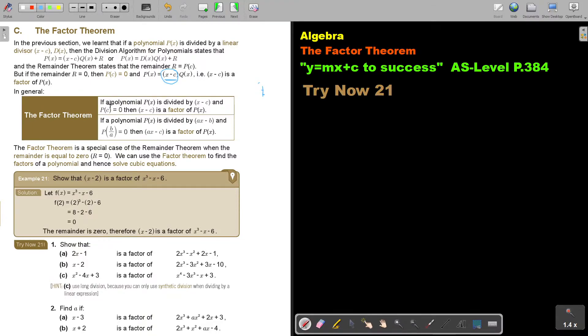Now, if a polynomial px is divided by x minus c, and pc is 0, the remainder is 0, then x minus c is a factor of px. And now, the same. But now, if the polynomial px is divided by ax minus b, just a little bit more complicated, and p b over a is 0, then this is a factor. The factor theorem is a special case of the remainder theorem. When the remainder is equal to 0, we can use the factor theorem to find the factors of a polynomial and hence solve cubic equations. And that's where we are heading to.